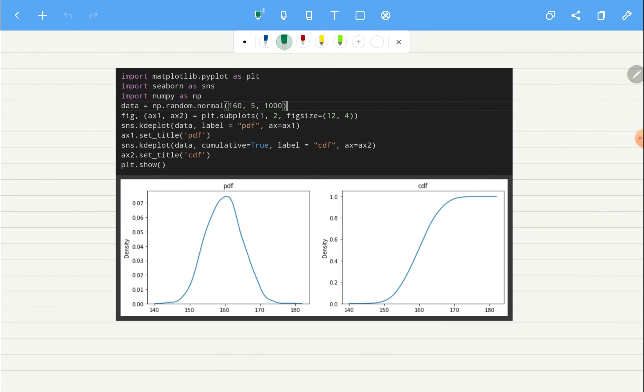So here you can see I have generated thousand data points which are normally distributed with the mean at 160 and standard deviation of 5. So this generally represents the woman's height which is normally distributed.